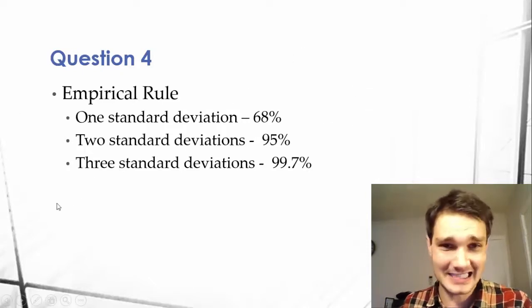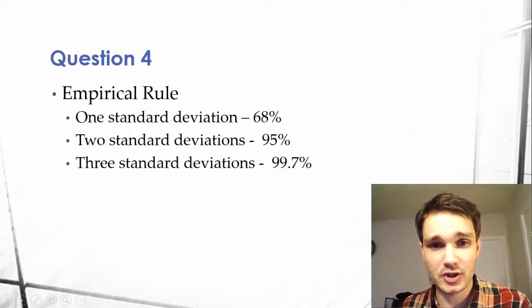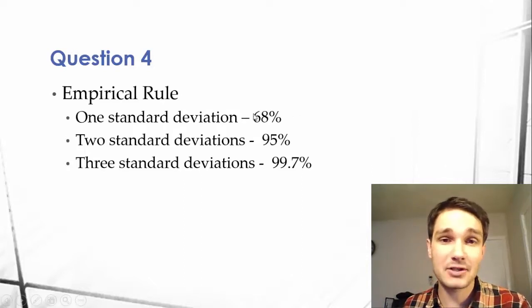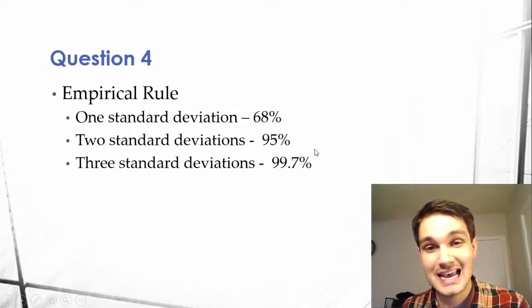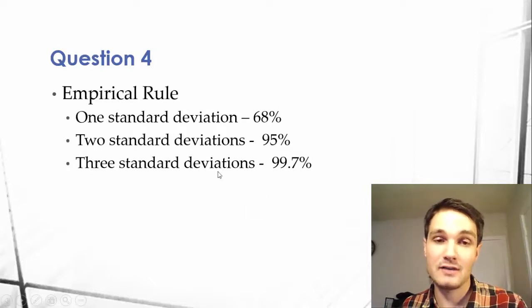All this rule says is that in a normal distribution, 68% of the data will be within one standard deviation, 95% of the data will be within two standard deviations, and 99.7% of the data will be within three standard deviations.